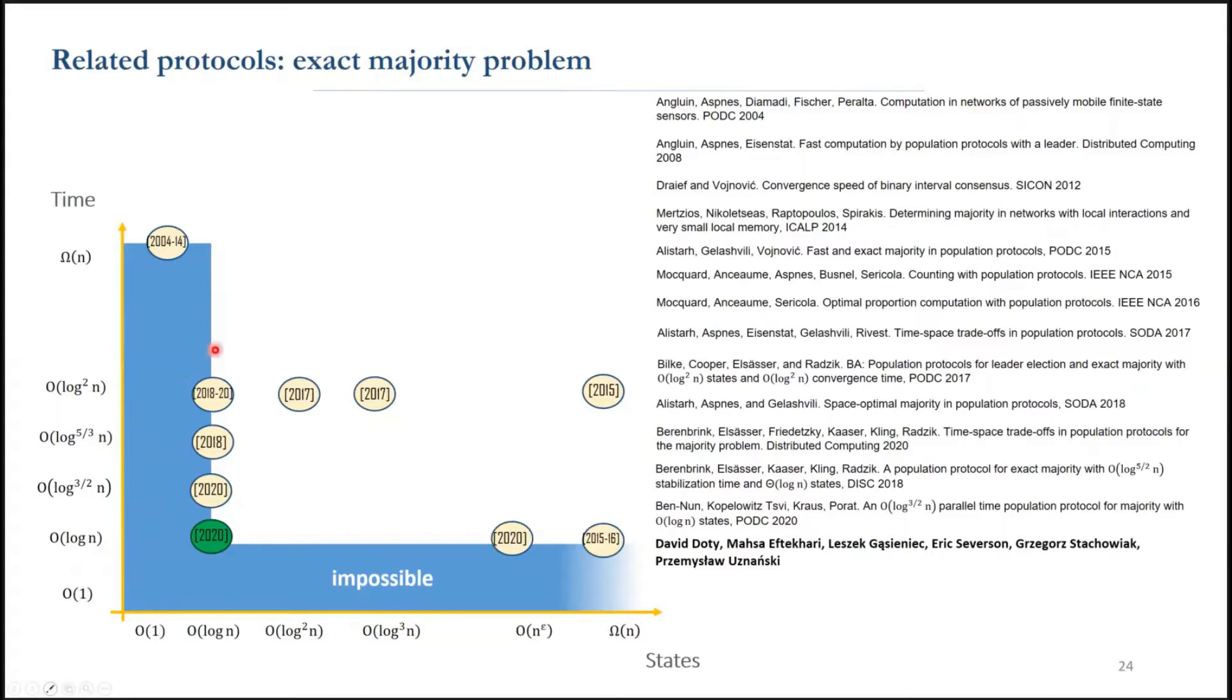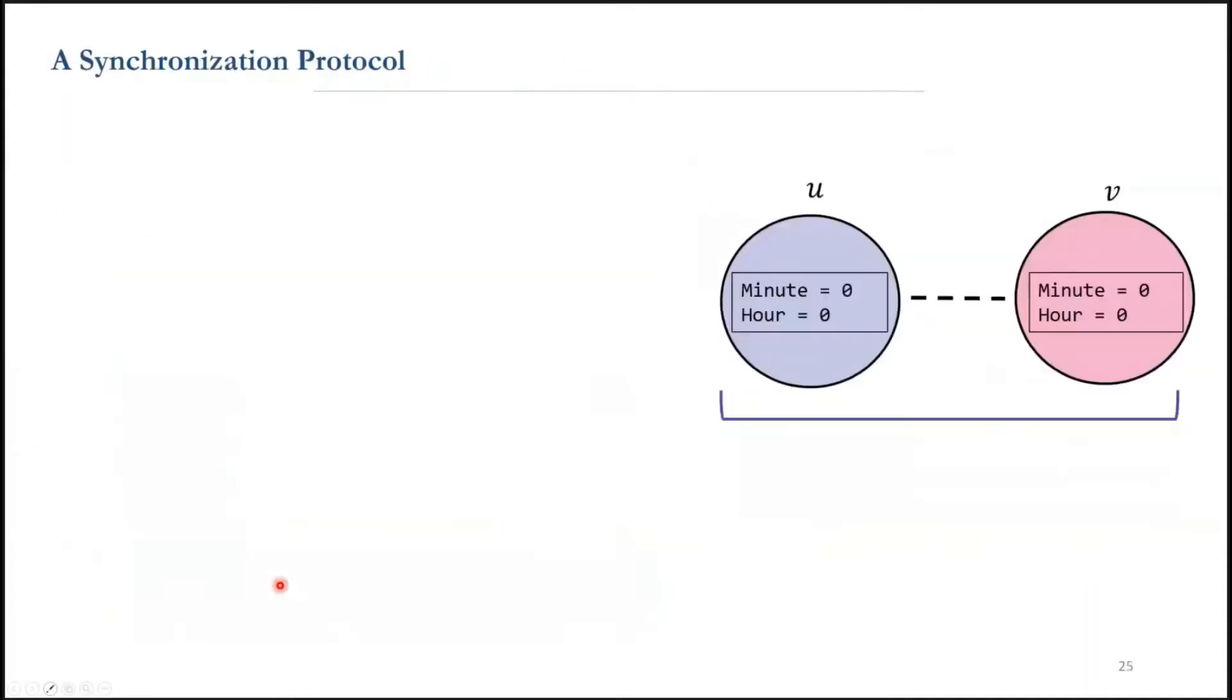Most of the majority protocols work in synchronized hours of cancel and split. Earlier, I said population protocols is an unsynchronized model of computation. In each time step, we select two agents to interact. So what do we mean by synchronized?